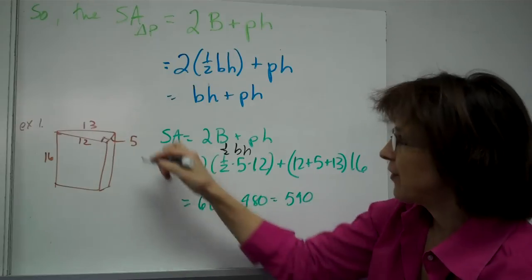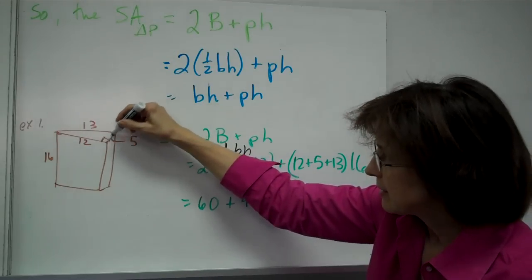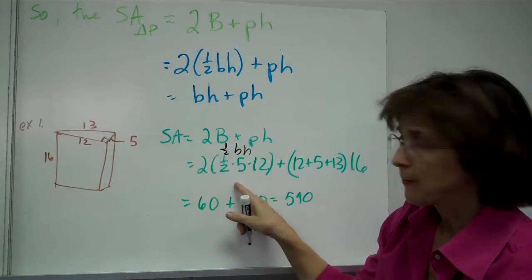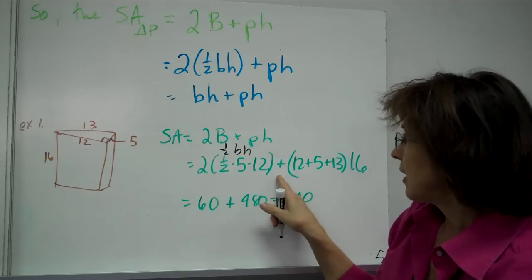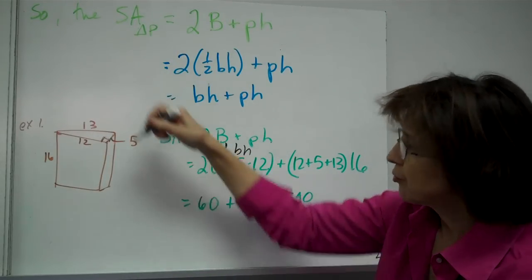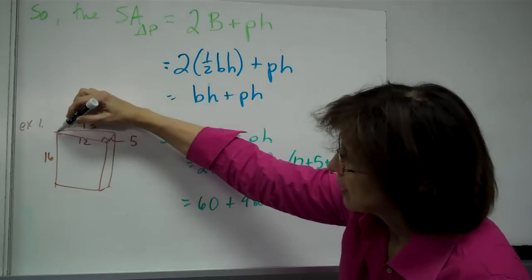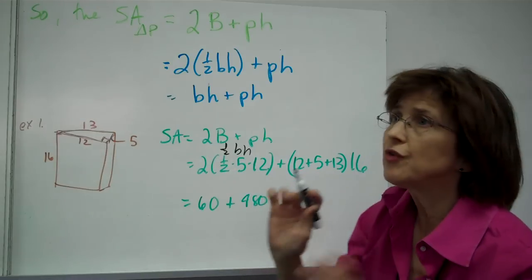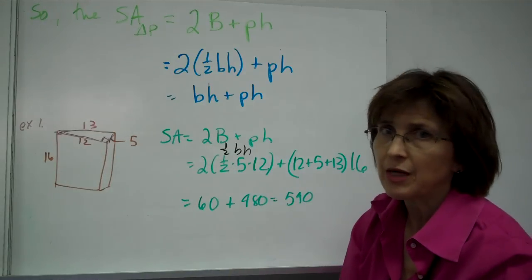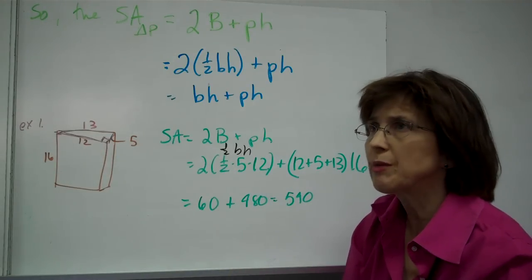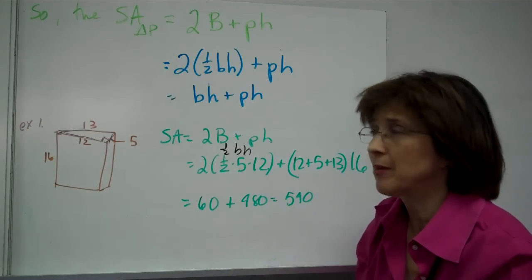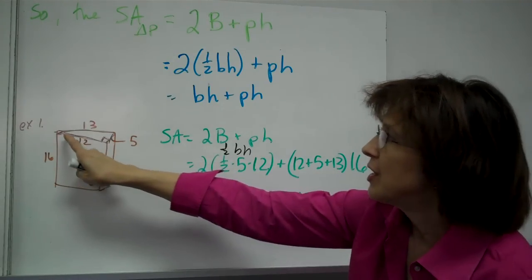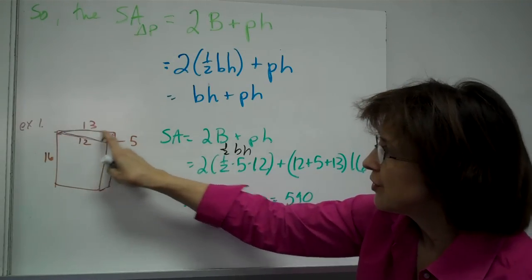So it's one half, five is my base, times 12 — or 12 times 5, it doesn't matter — plus the perimeter. The perimeter is the full triangle, and they're going to give you all the numbers — sometimes too many numbers, so don't worry about finding a number. They're going to give you the numbers, and you'll find the triangle right there in the figure.